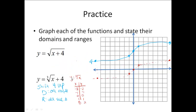The range for practice problem 1: the smallest y value is 0, and y values go upward, so y is greater than or equal to 0. For the second practice problem, first graph y equals the cube root of x in red with positive and negative points — no restrictions needed. Then shift each point up 4 to get the blue graph, which is the actual answer. The domain is all real numbers since it goes on forever in both x directions, and the range is also all real numbers since it goes up and down forever.